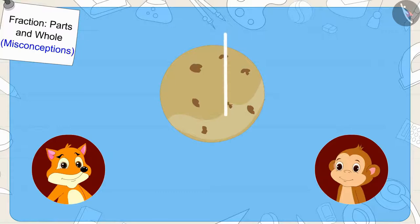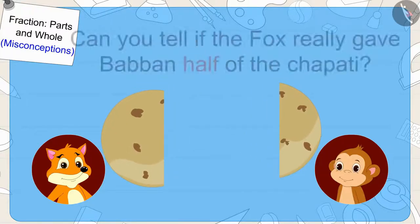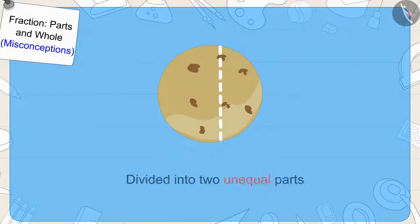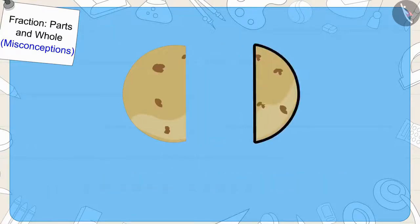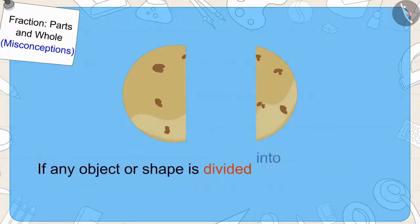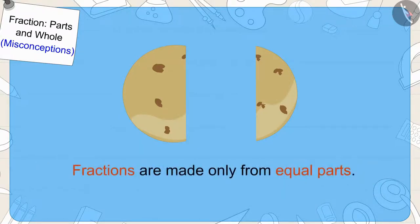The fox divided the chapati into two parts like this and gave one part to Babban. Can you tell if the fox really gave Babban half of the chapati? The fox did not give half to Babban — the fox did not divide the chapati into two equal parts. So the portion that Babban got was not half of the chapati. Children, if any object or shape is divided into unequal parts, then we cannot write it as a fraction. Fractions are made only from equal parts.